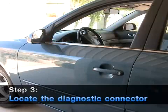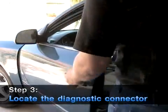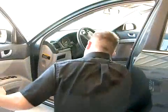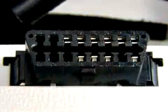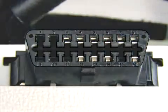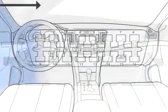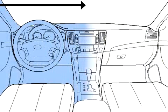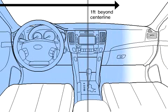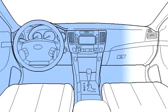Step 3: Locate the diagnostic connector. The diagnostic link connector, or DLC, is D-shaped and has 16 pins. It is located in the area bounded by the driver side door well and one foot to the right of the vehicle center line. The connector is usually located on the driver side under the dash.